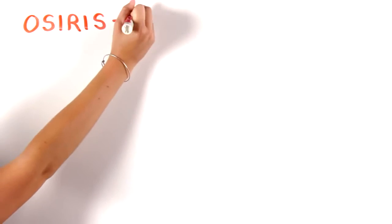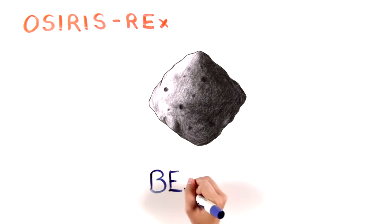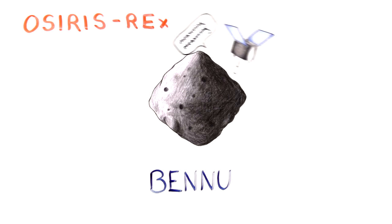The OSIRIS-REx mission is going to send a spacecraft in 2016 to visit an NEO called Bennu. The spacecraft will measure the Yarkovsky effect on Bennu's orbit to determine whether it will be a threat to the Earth in 200 years.